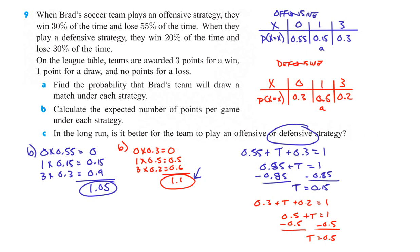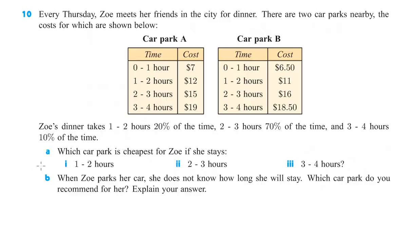One last one to look at — number 10. Every Thursday, Zoe meets her friends in the city for dinner. There are two car parks nearby, the costs for which are shown below. Zoe's dinner takes 1 to 2 hours 20% of the time, 2 to 3 hours 70% of the time, and 3 to 4 hours 10% of the time. Which car park is cheapest for Zoe if she stays for each of these cases?